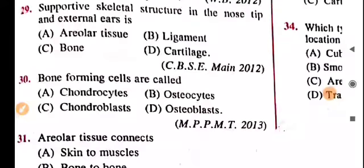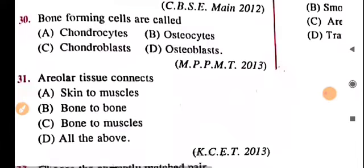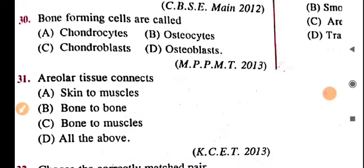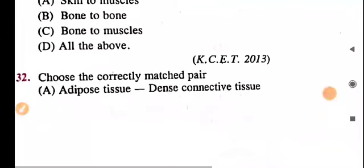Question 30: bone-forming cells — I'm leaving this for you to answer in the comment box. It is very important and will be discussed multiple times in this lecture. Question 31: areolar tissue connects skin, muscle, bone to bone, and bone to muscle — I'm leaving this for you to work out.